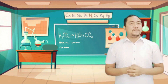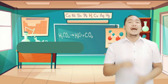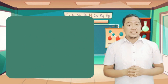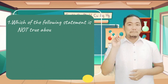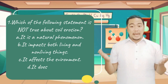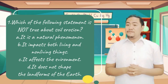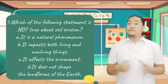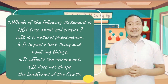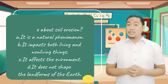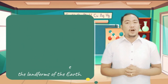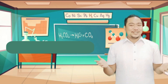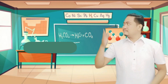Number 1. Which of the following statements is not true about soil erosion? A. It is a natural phenomenon. B. It impacts both living and non-living things. C. It affects the environment. D. It does not shape the landforms of the earth. And the answer is letter D.